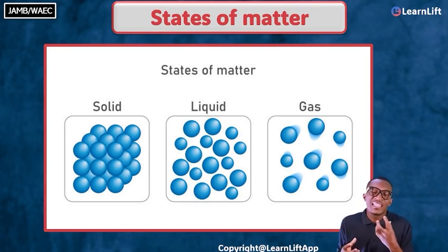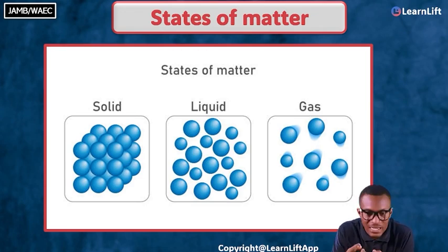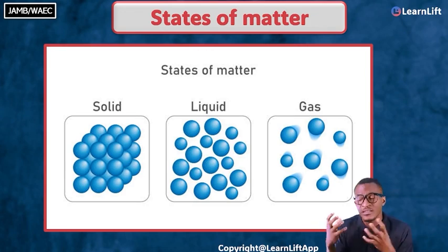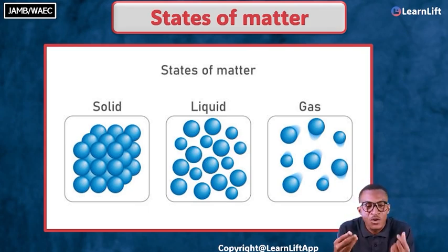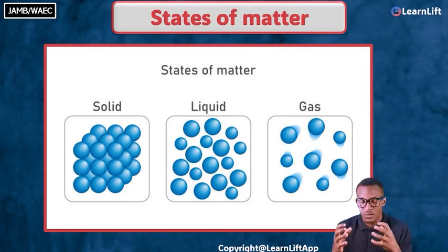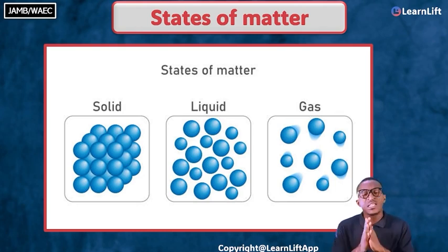In liquid, the molecules are sparse — there are spaces — which allows the molecules to move apart. In gases, the molecules can easily move about because they already have space. This differentiates solid from liquid and from gases in terms of the motion of their molecules. In liquid the molecules are free but not as free as in gases, where molecules can move from one place to another.